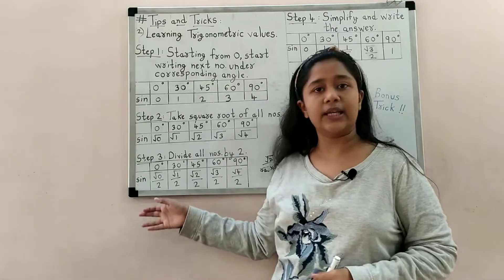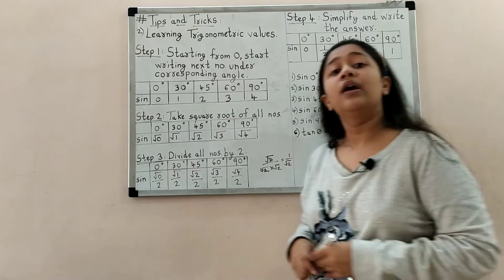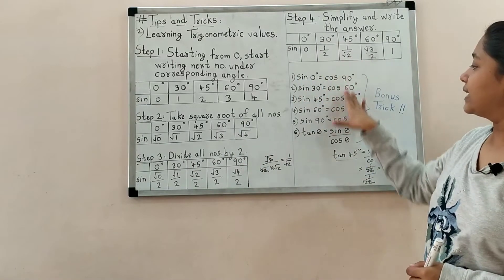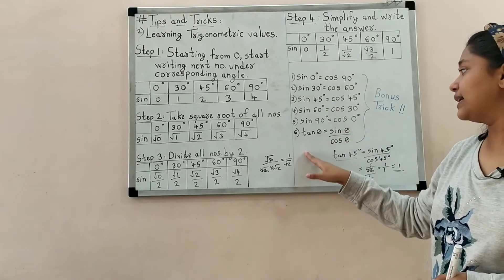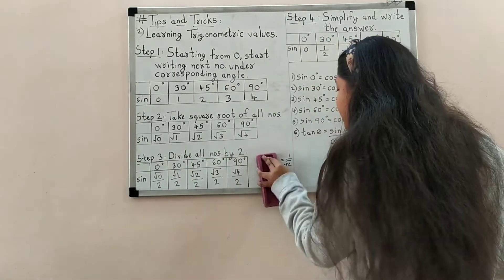You can do sin upon cos to find tan. Sin values you can learn using this trick, cos values by reversing sin values, and tan is sin upon cos. I have explained this trick and tan theta is sin theta upon cos theta.